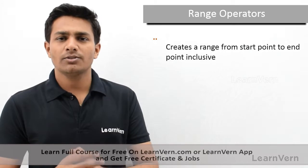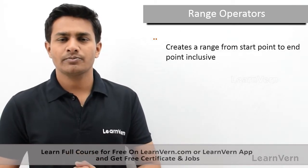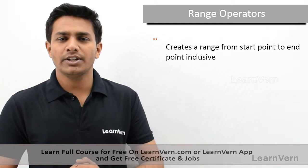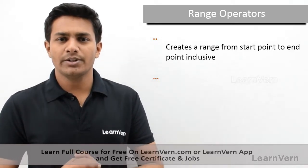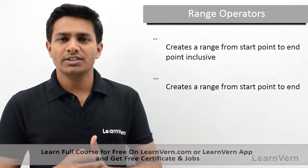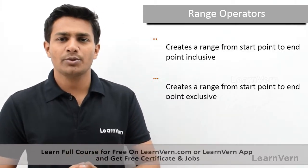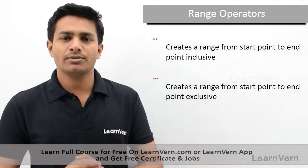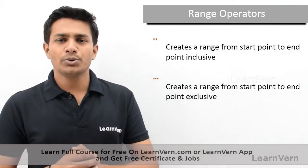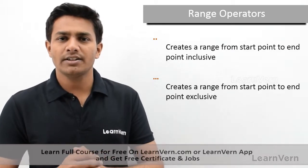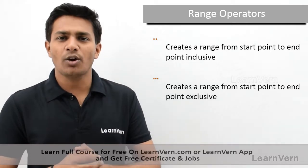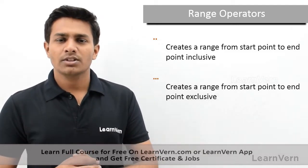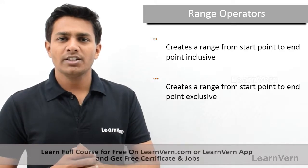This is how the first range operator, double dot, works. The second range operator is triple dot — three dots. The triple dot operator ranges from the left operand, which is the start point, includes the start point, but ends on the right operand minus one. For example, with a range of one triple dot ten, the output would be one, two, three, four, five, six, seven, eight, and nine. It will not include the right operand in the range.